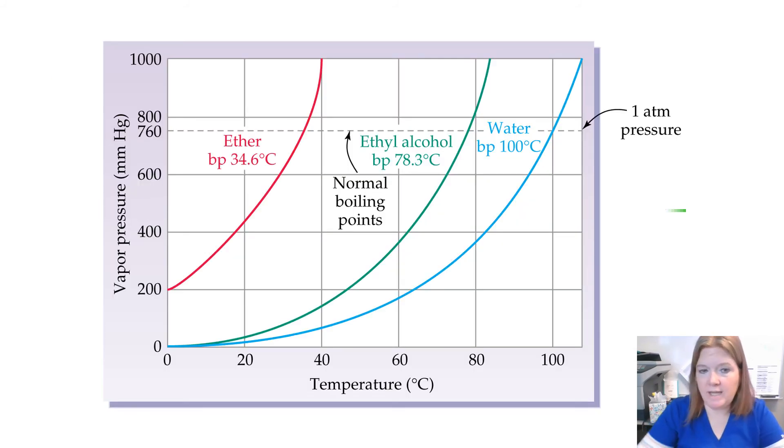So again, that line in your table H, that's 101.3 kPa, which is also equal to this in terms of millimeters of mercury. But you can see that dotted line represents normal boiling point. So wherever that is for each substance, that's its normal boiling point.